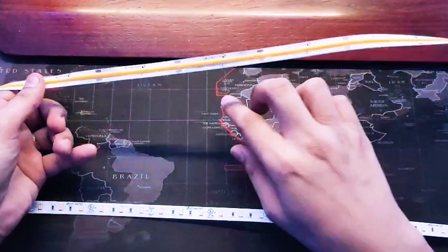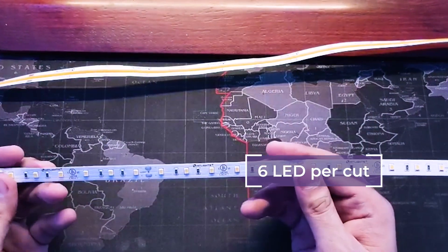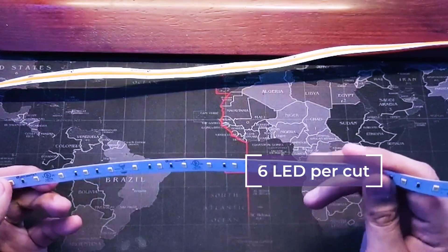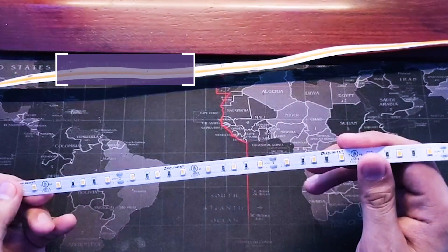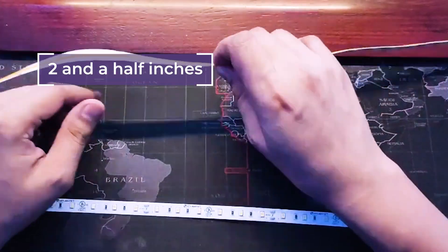So the 24-volt strips would have six LEDs per cut line, and then the COB chips or COB strips would be cuttable every two and a half inches. So side-by-side, that's how they look.